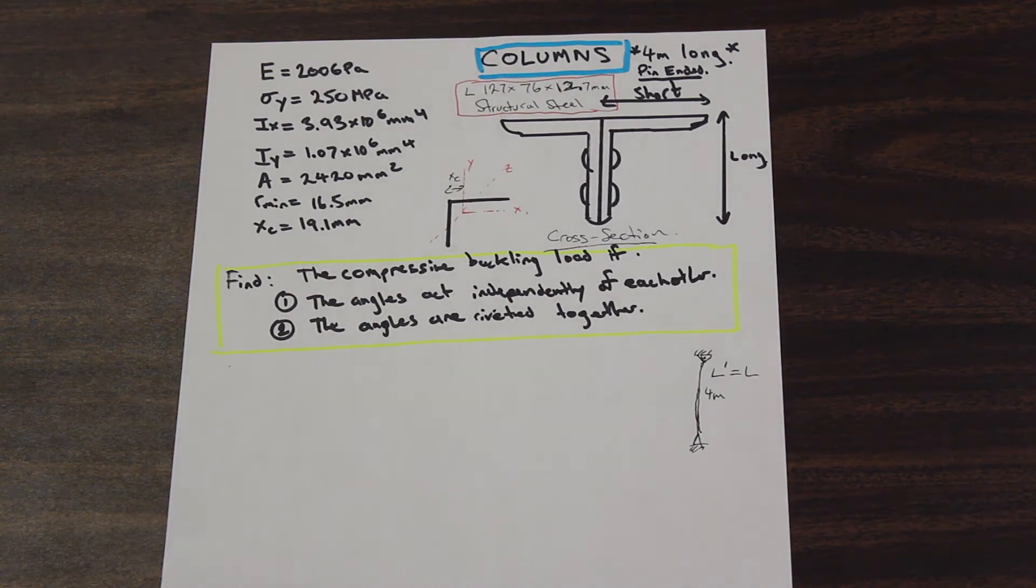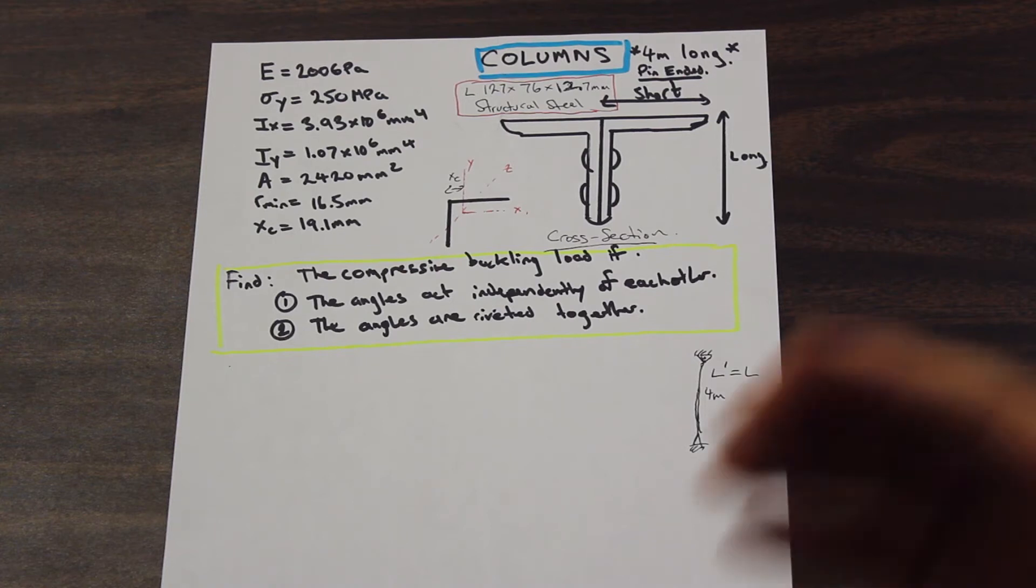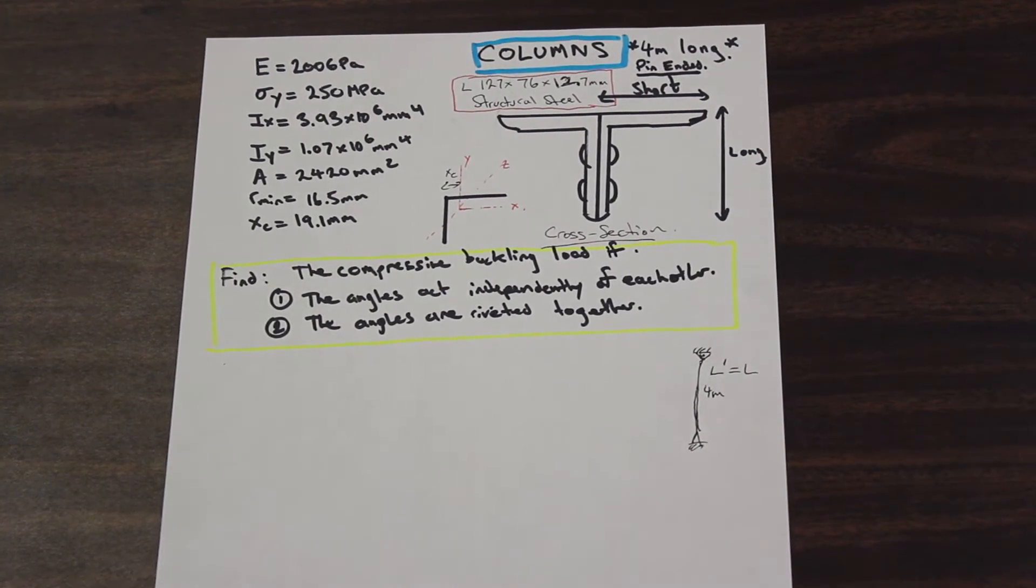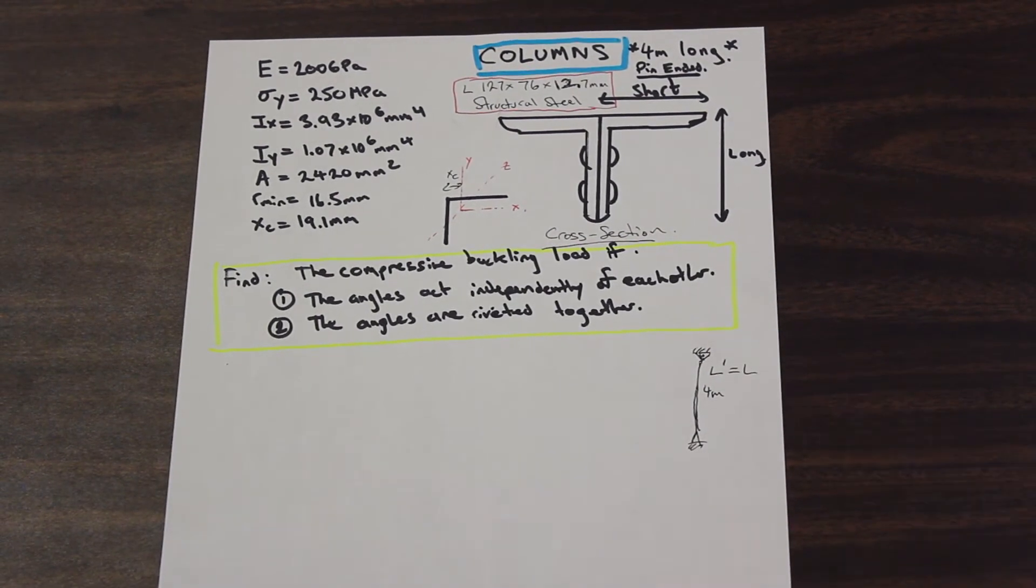So how do we begin this question? Well, first of all, we need to find our minimum moment of inertia. So you have to remember that in columns, the weaker axis is always going to be the one to buckle first. And as we've discussed before, the moment of inertia is a shape or cross-section's resistance to bending. So the one that has the lower resistance to bending, the lowest I, that axis is going to buckle first.